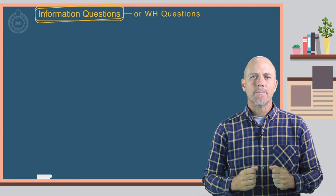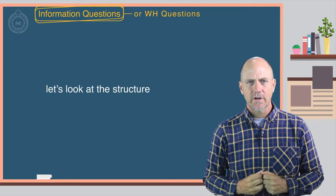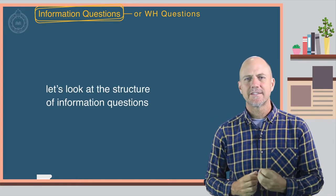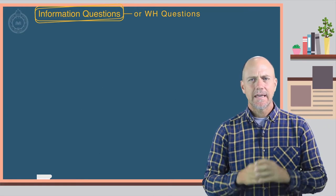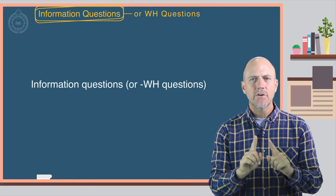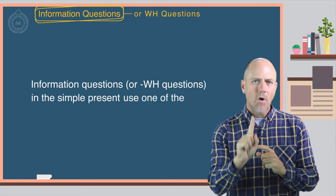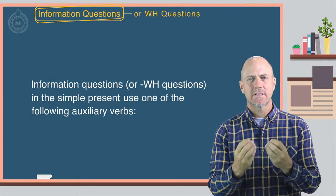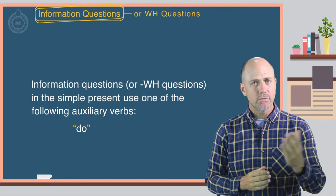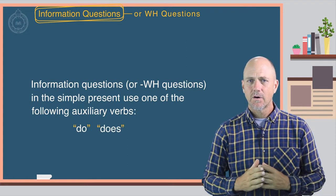Now, let's look at the structure of information questions in English. Information questions, or WH questions, in the simple present use one of the following auxiliary verbs: do, does, or be.